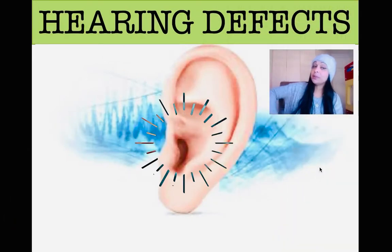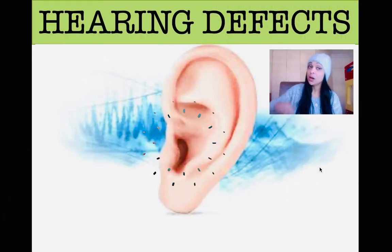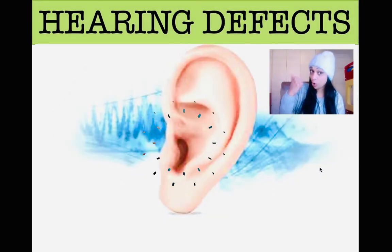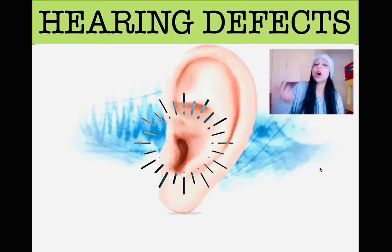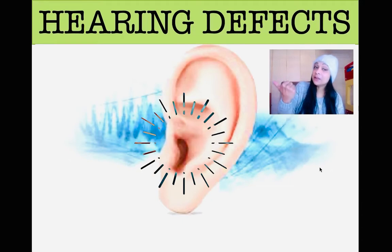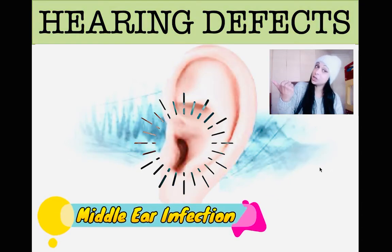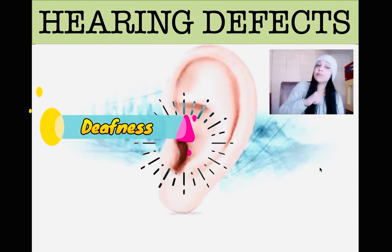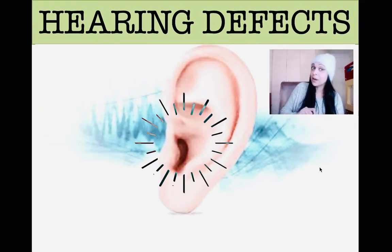Today we will be discussing hearing defects. Many people have hearing defects. Our focus will be on the cause and treatment of two types of hearing defects. We will look at middle ear infection and the use of grommets, as well as deafness and the use of hearing aids and cochlear implants.